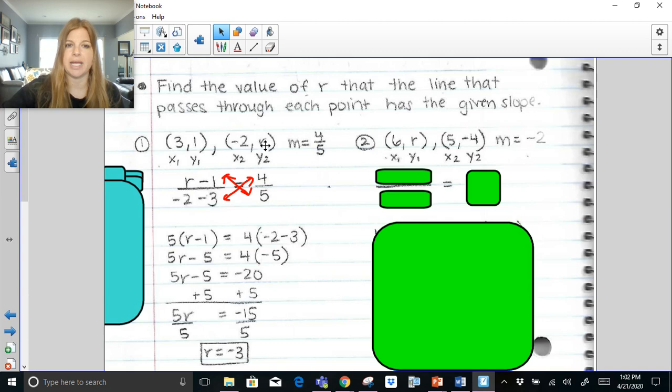So if I was to plug in a negative 3 here, I'm going to end up getting this result of 4/5. Now think about it. If I plug in a negative 3, negative 3 minus 1 is negative 4. Negative 2 minus 3 is negative 5. Negative 4 over negative 5? Positive 4/5. It works. Let's try the same thing here.